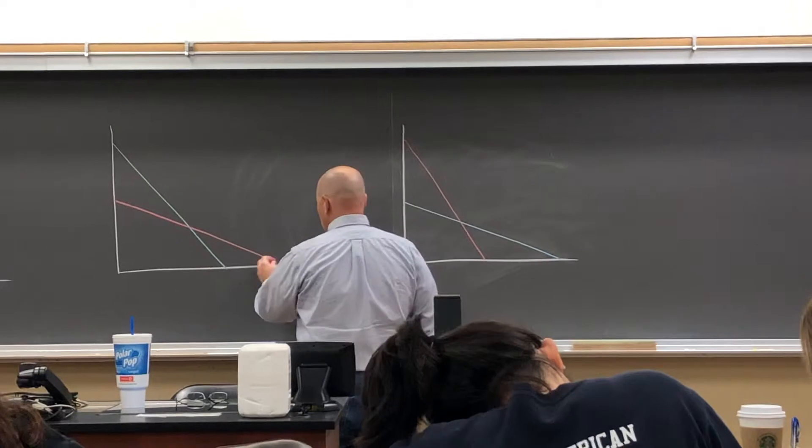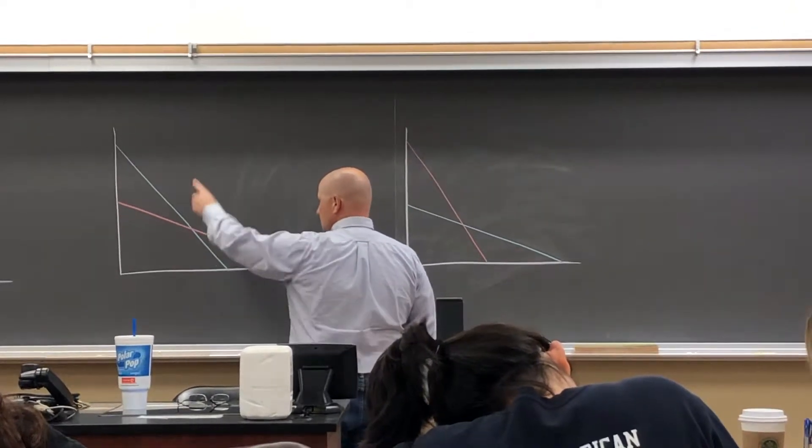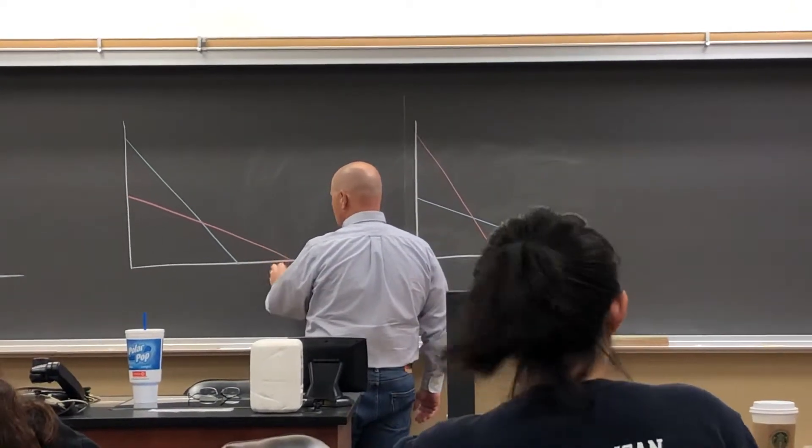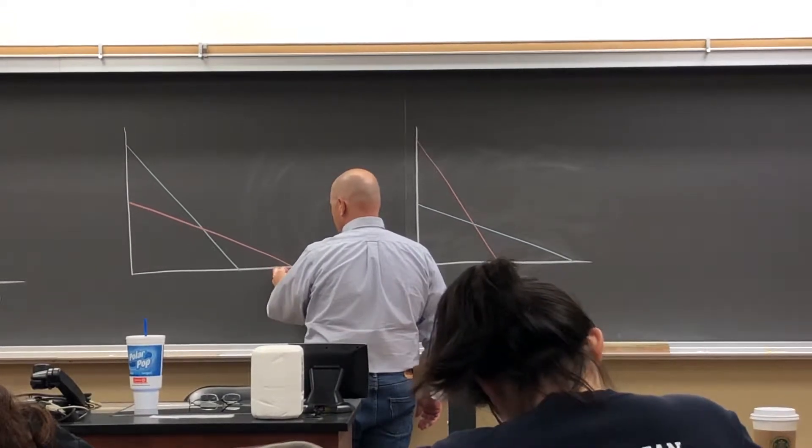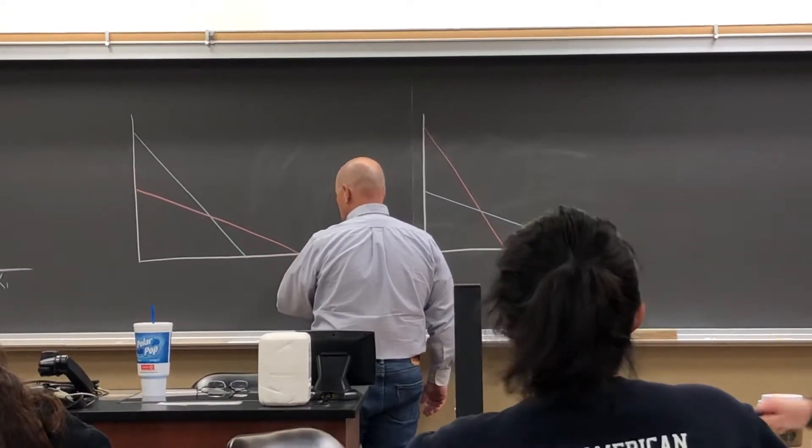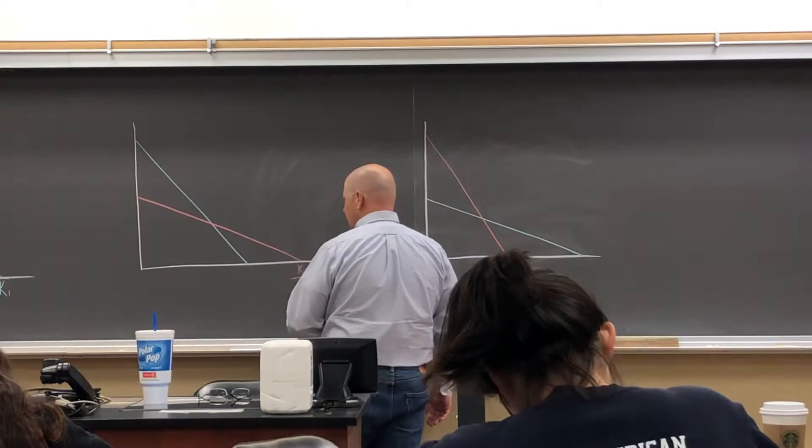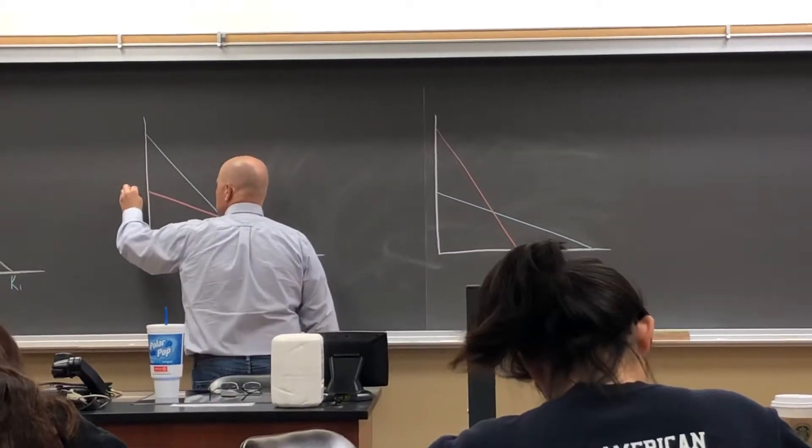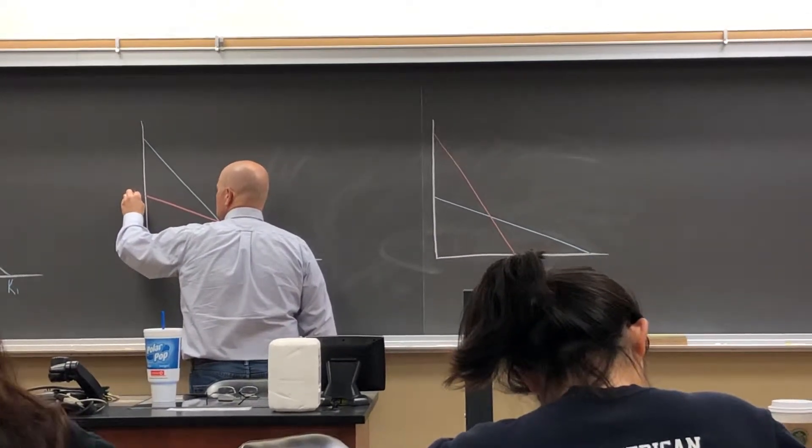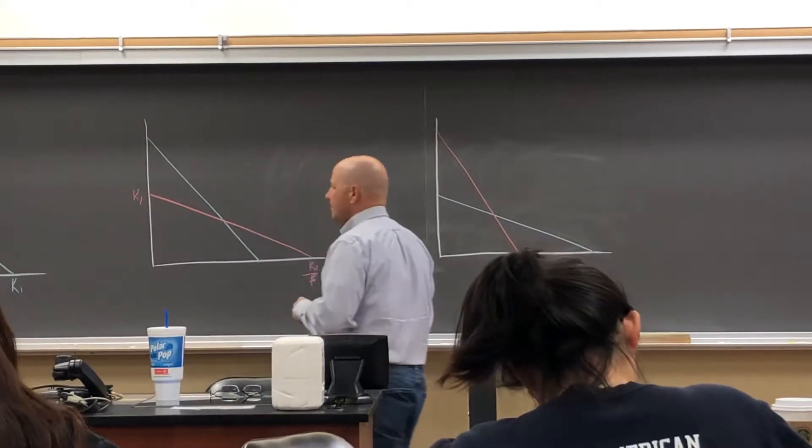Okay, so I'm going to label the ends of these, the points at which the zero growth isoclines touch our x and y axis. So here it's k2 over beta. Here it's k1. Here k2 is...